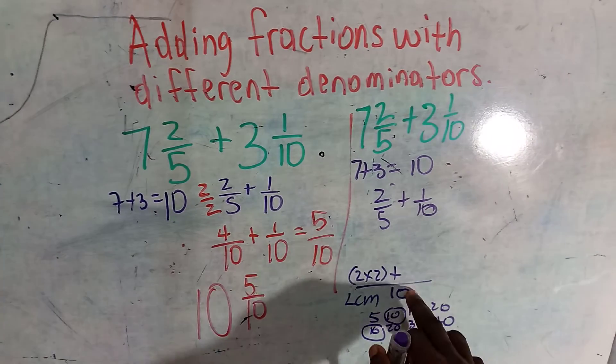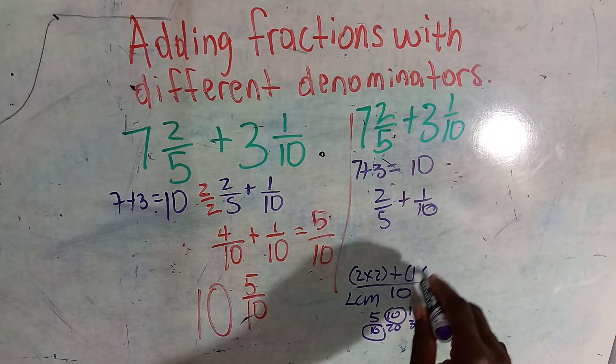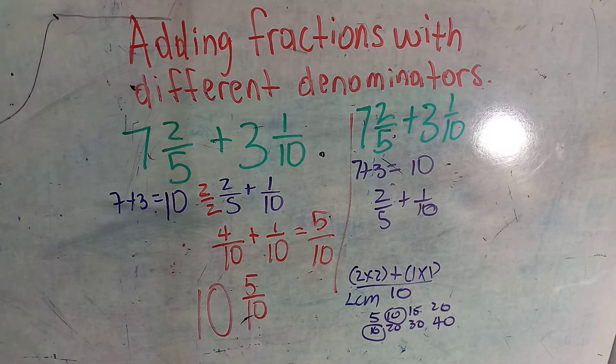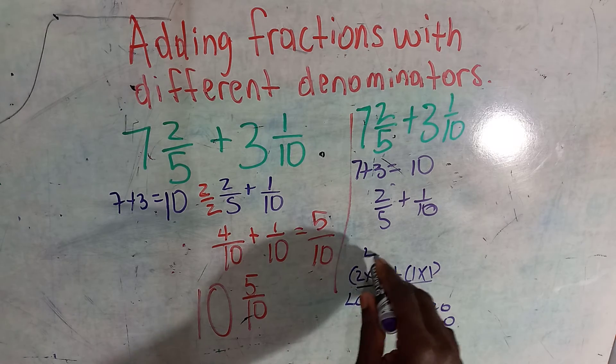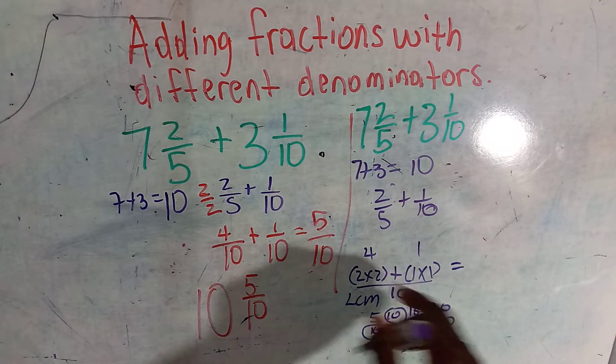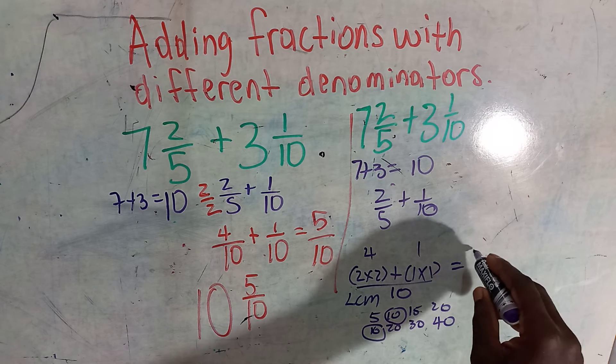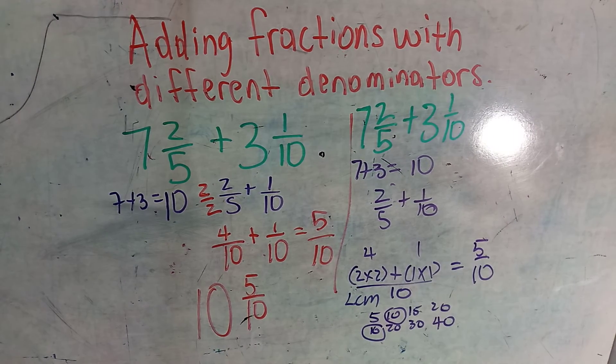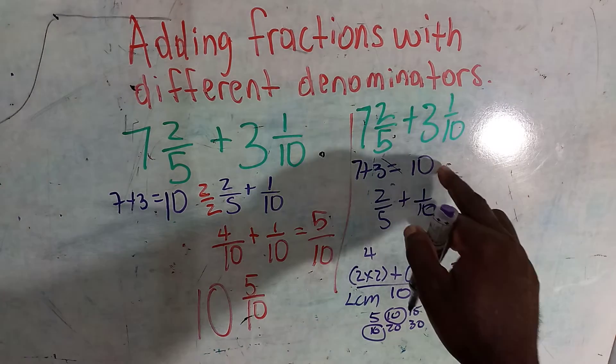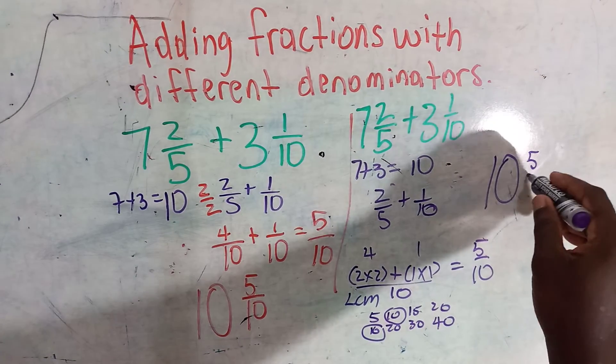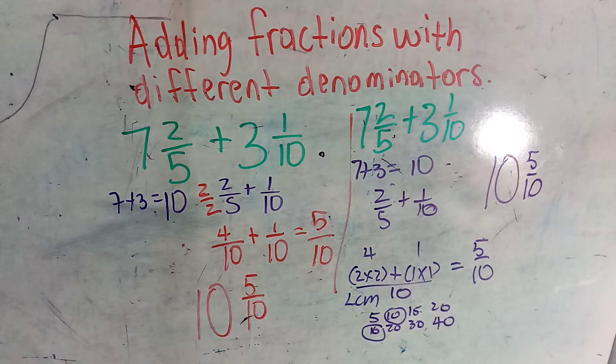We multiply it by the numerator. Two times two is four. One times one is one. When we add these numerators, we are going to get five over the denominator which is ten. So remember to put back your ten - your answer is going to be ten and the fraction five over ten.